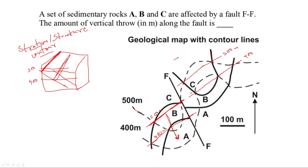Here you can see that the 500 meter stratum contour of the C-B contact is coincident with the 400 meter stratum contour of the B-C contact on the right side of the fault. This cannot happen — this can only happen if the beds are displaced. The B-C contact would be exposed at other points also — it can be exposed at 400 meters obviously, but not at the same point; they will not be coincident. This means that it is affected by the fault.